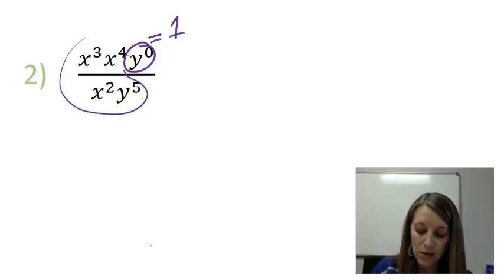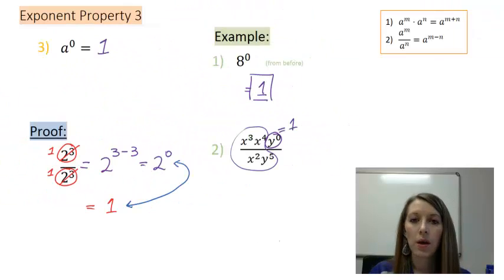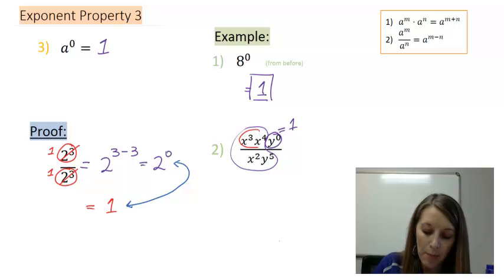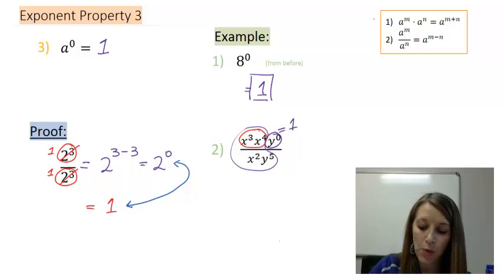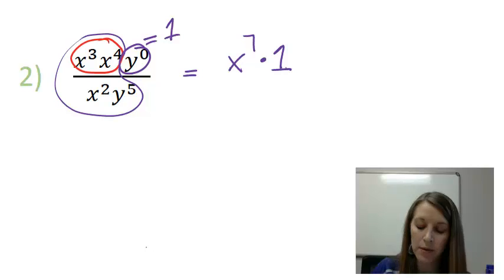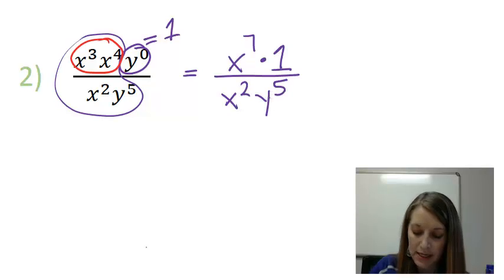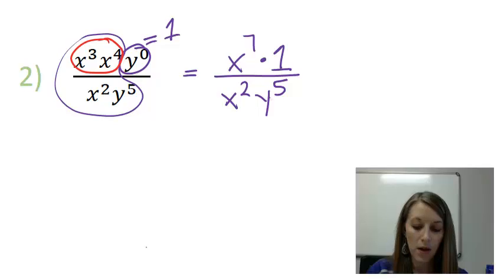Well, what happens in the rest of this problem then? Now I'm going to take a couple steps to simplify this problem. If you can do this all at once, no big deal. So in the top I have x cubed times x to the 4th. Well, that uses property number 1 up here, which says I add my exponents. So that gives me x to the 7th. I'm going to multiply this times 1 because that's what y to the zero was, and everything in the denominator I'm just going to copy down because I did not simplify that at all.